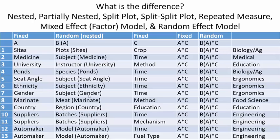I've created a bunch of examples where people use different names in different fields. For example, split plot develops in the biology field — you have a big piece of land, a whole block, split into sections to grow different crops. In a medical field, you give medicine to a subject and measure over time how they're doing, so subjects are repeatedly measured — that's why it's called repeated measure. Nested design is when any factor is nested, for example an instructor nested within a university.